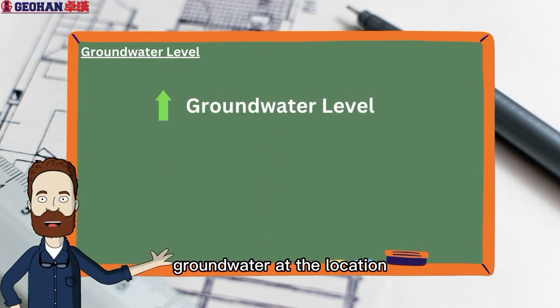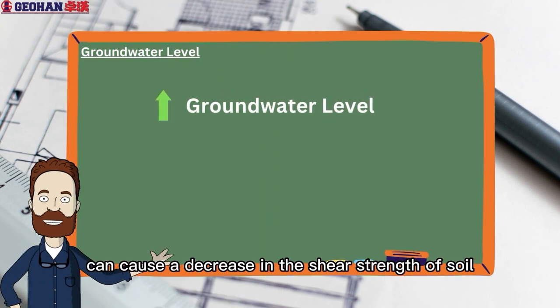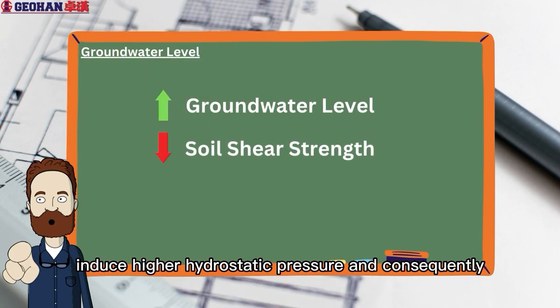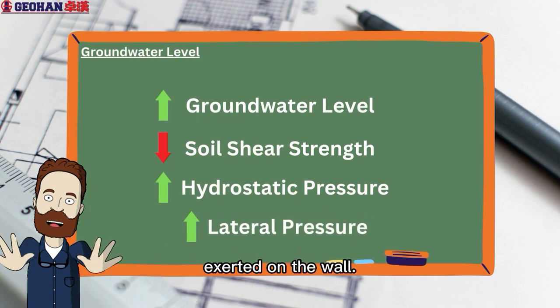This aligns with the theoretical expectations. A high level of groundwater at the location can cause a decrease in the shear strength of soil, induce higher hydrostatic pressure, and consequently lead to an upsurge in lateral pressure exerted on the wall.